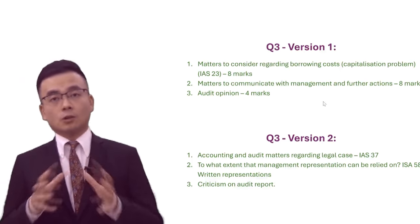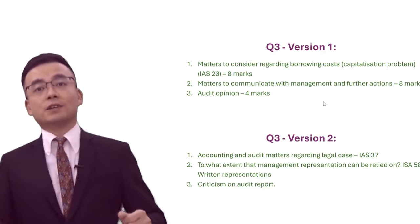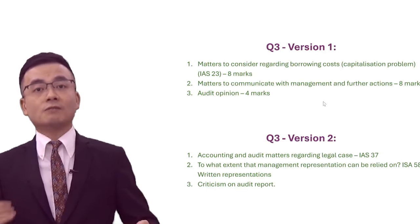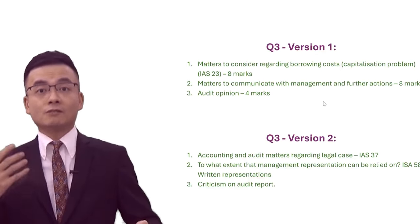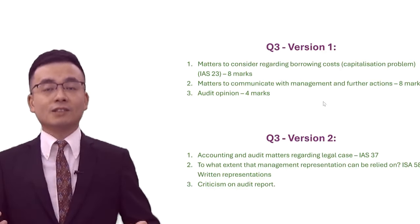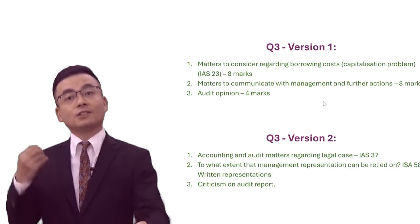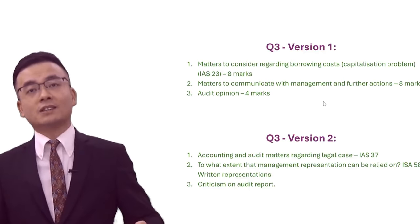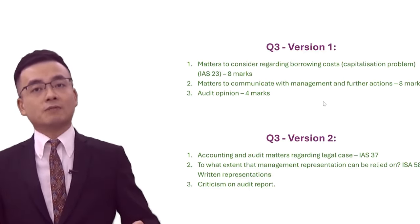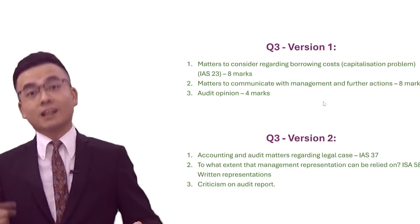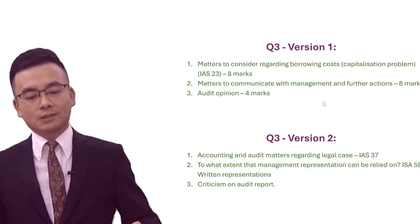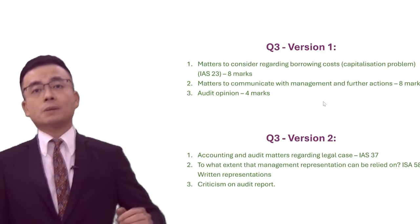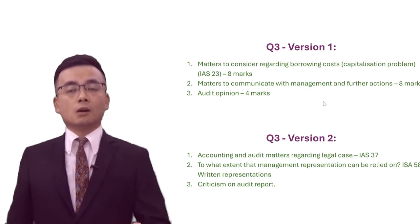Version number two is all about a legal case according to IAS 37, Provisions Accounting, and ISA 580 written representations — specifically whether or not you can rely on them. Of course, this is internally generated audit evidence, so you need to be very careful. For completeness, you will need to obtain the written representation, but you can't solely rely on this piece of evidence. It also requires you to make some comments about the criticism of the audit report.